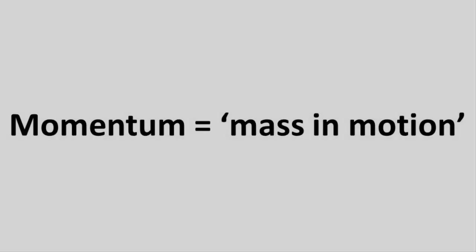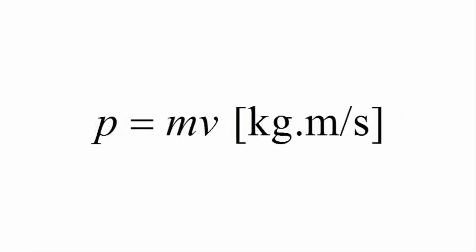In summary, momentum describes moving mass, or mass in motion. Linear momentum, or momentum for objects moving in a straight line, is equal to the product of its mass and its linear velocity. The unit for momentum is kilograms meters per second, and momentum is a vector quantity.